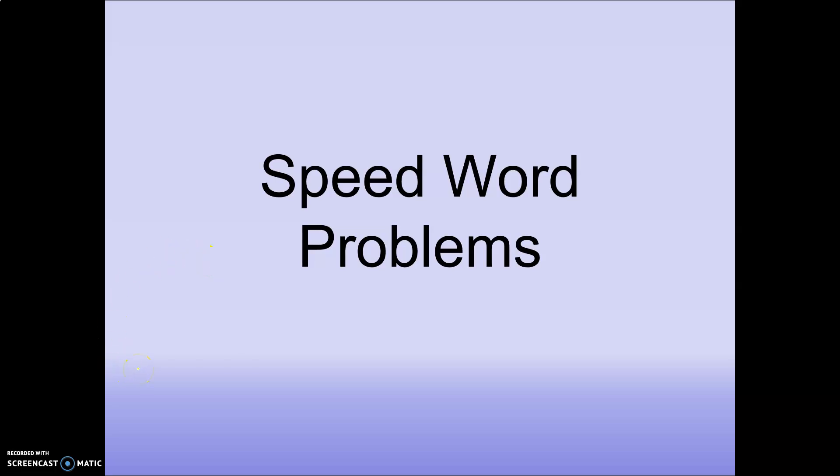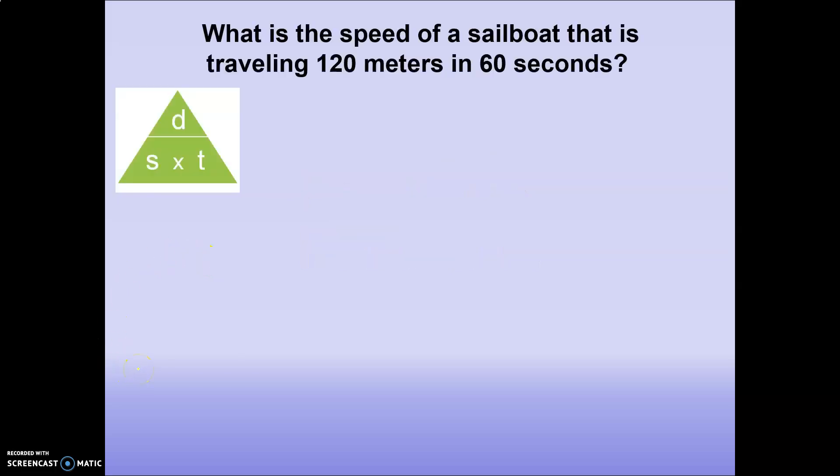In this video we're going to be solving some speed word problems. So let's go ahead and get started. Number one, what is the speed of a sailboat that is traveling 120 meters in 60 seconds? So using our triangle, we're looking for speed. So speed equals distance divided by time.